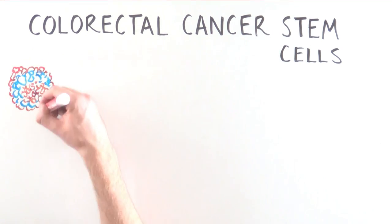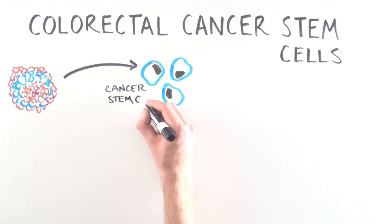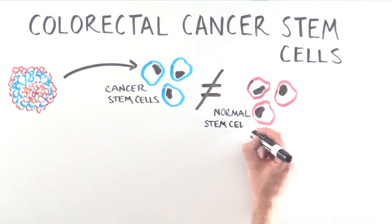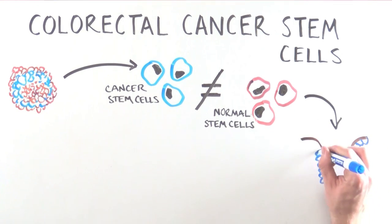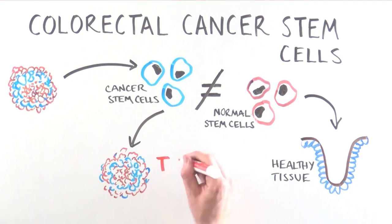Cancerous tumors are composed of all kinds of cancer cells. In particular, certain cancers contain cancer cells that resemble stem cells. It's important to understand that these cells are not identical to normal stem cells. Instead of recreating a tissue, like normal stem cells do, they can recreate an entire tumor.